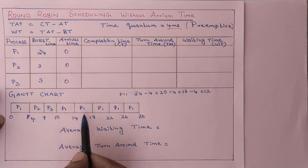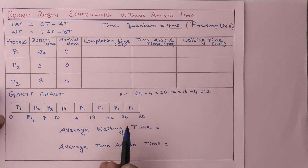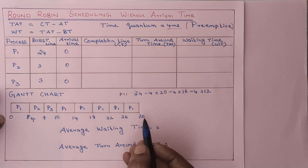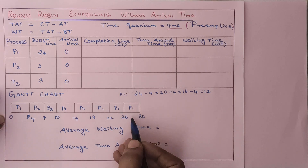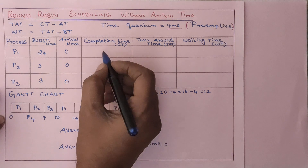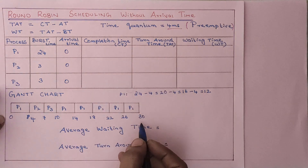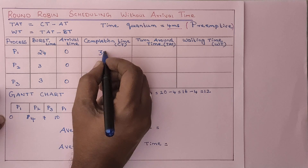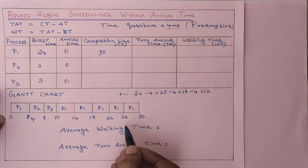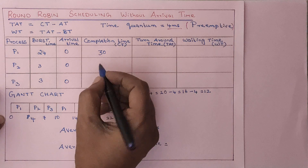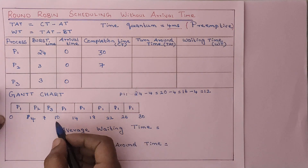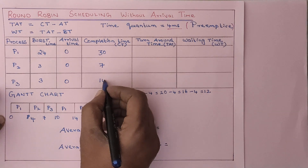Now we will calculate the completion time. Moving from the right-hand side of the Gantt chart: the completion time of process P1 is 30. What about process P2? P2 has a completion time of 7 milliseconds. And what about P3? P3 has a completion time of 10 milliseconds.